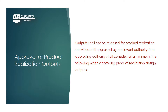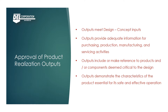Outputs shall not be released for product realization activities until approved by a relevant authority. The approving authority shall consider, at a minimum: that outputs meet design concept inputs; that outputs provide adequate information for purchasing, production, manufacturing, and servicing activities; that outputs include or make reference to products and components deemed critical to the design; and that outputs demonstrate the characteristics of the product essential for its safe and effective operation.